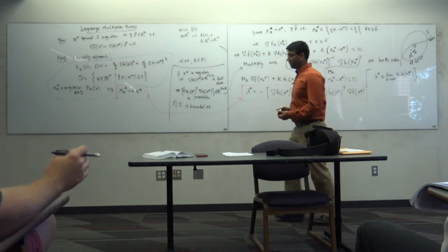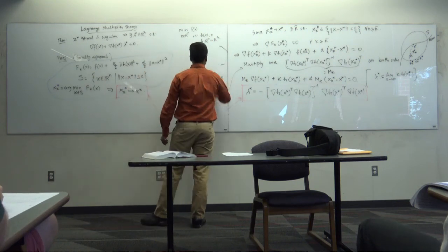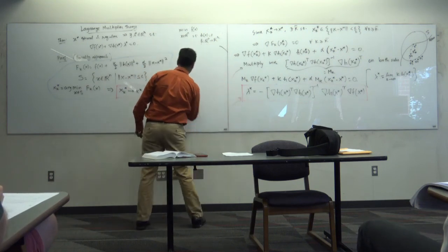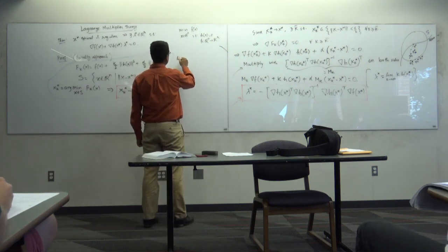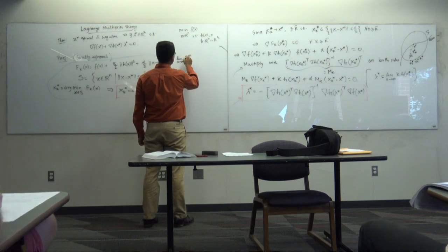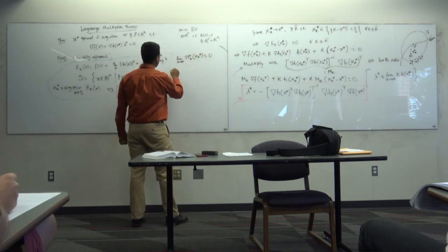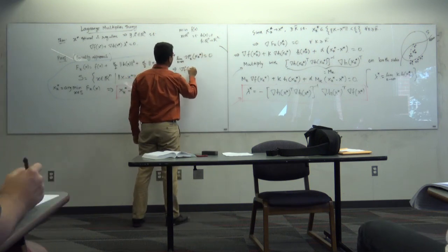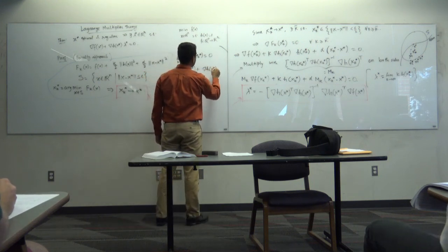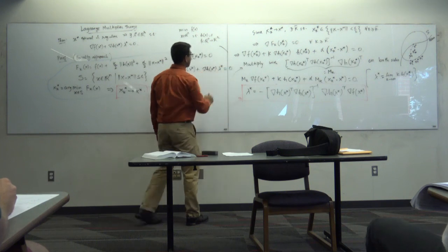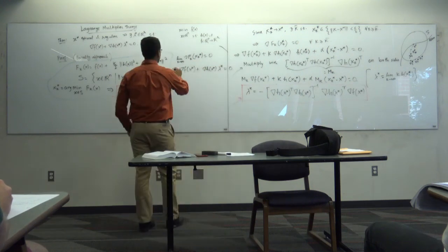The final step: substituting λ* and letting k → ∞ in the gradient equation gives: lim_{k→∞} ∇F_k(x_k*) = 0 implies ∇f(x*) + ∇h(x*)·λ* = 0. This is exactly what we wanted to prove — the Lagrange multiplier condition.